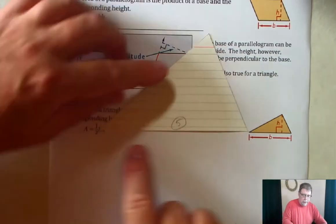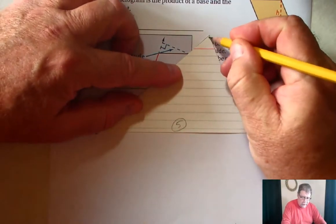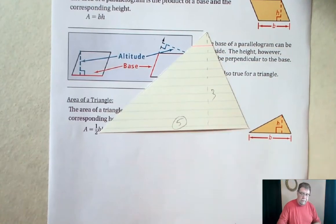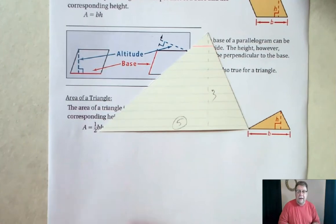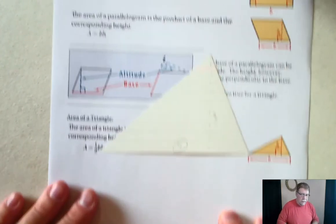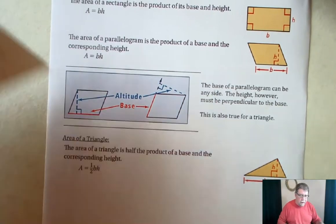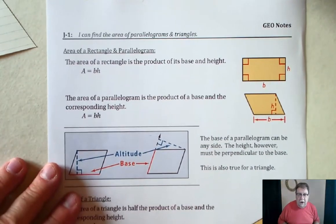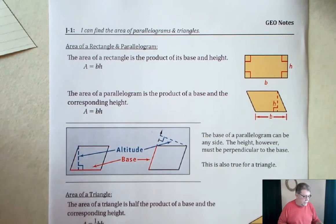So remember, it's the base, this base, but it's the height that is perpendicular. That's the height, which was three inches. And so we have to take half of five times three. That gives us the 7.5. And there's our notes for the area of the parallelogram in the triangle here in section J1 as we start area. And let's take a look at some examples coming up next.